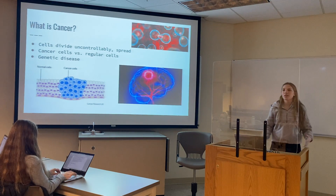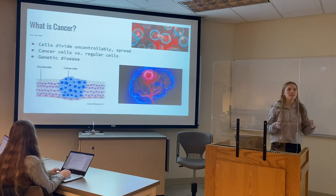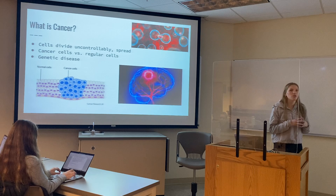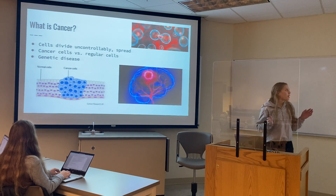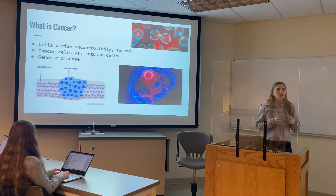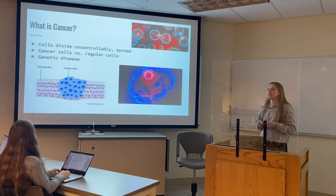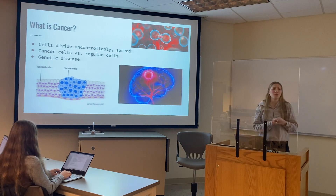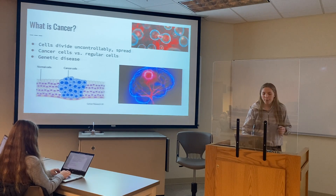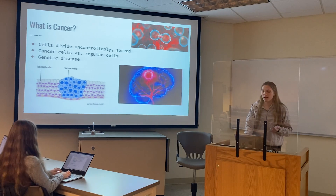To first understand what brain cancer is, we need to understand what cancer is. Cancer is when your cells start dividing uncontrollably and then those can form masses called tumors, which can spread throughout the body. The difference between cancer cells and regular cells is that cancer cells ignore your body's signals to stop dividing, can surpass the immune system, mess up your blood vessels, and spread to other parts of your body. This can also be a genetic disease passed down through genes, but that's more uncommon.